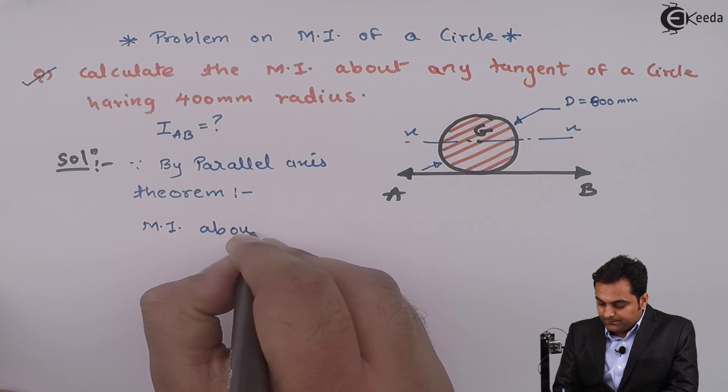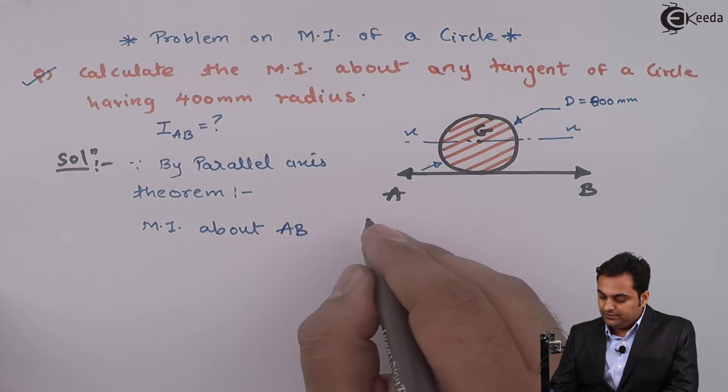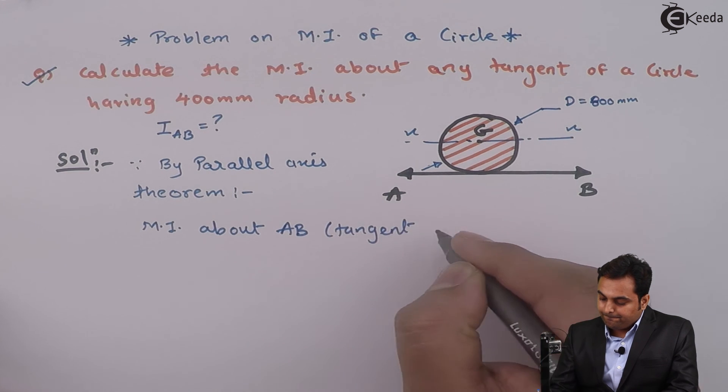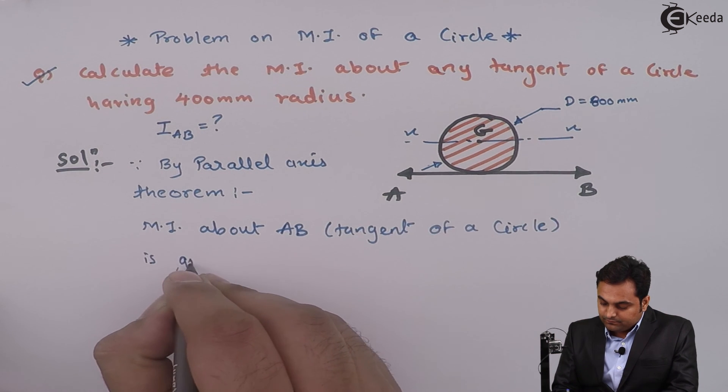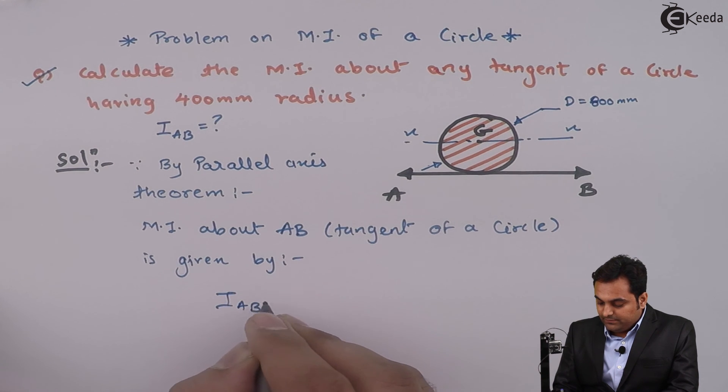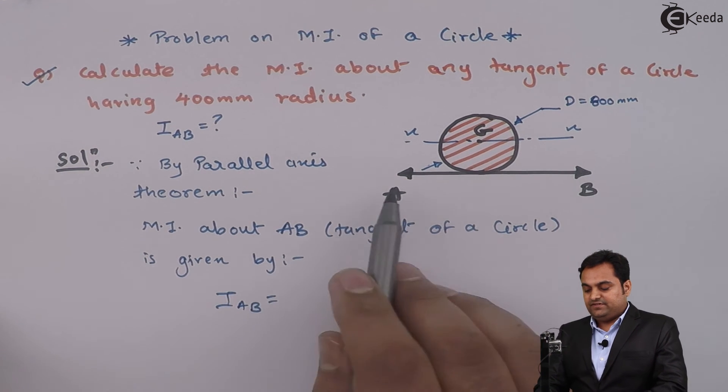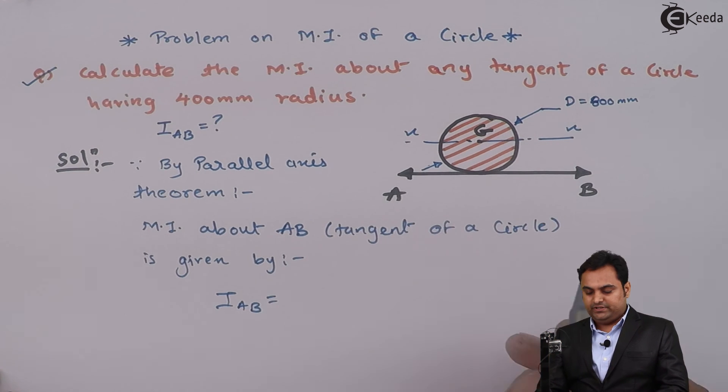MI about AB, that is the tangent of a circle, is given by I_AB. We know that by parallel axis theorem it is I_AB equal to I_x-axis, because AB is parallel to x-axis.